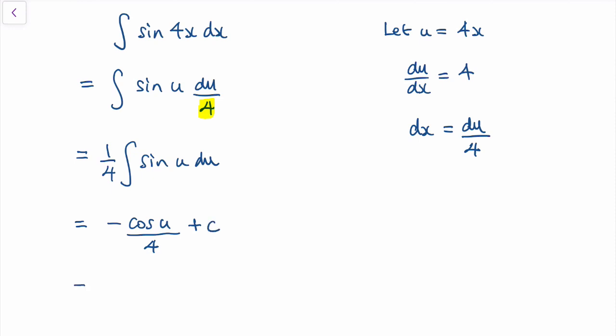The last step is to substitute back in for u, where u equals 4x. So the answer is negative cos 4x over 4 plus c.